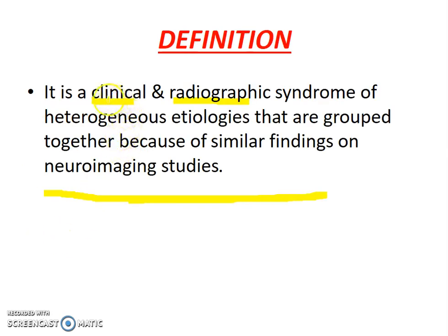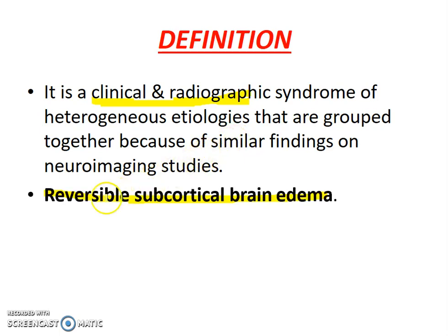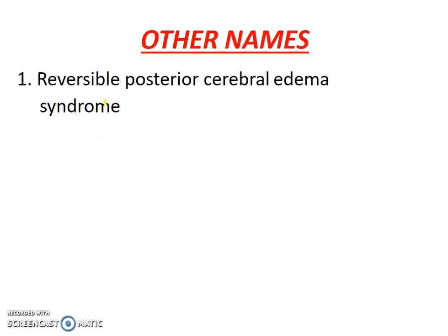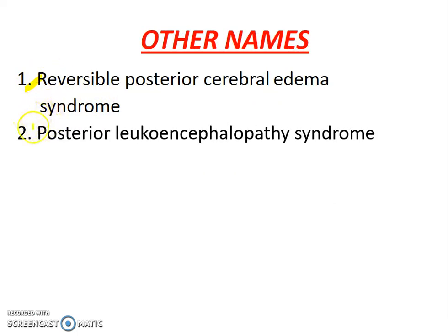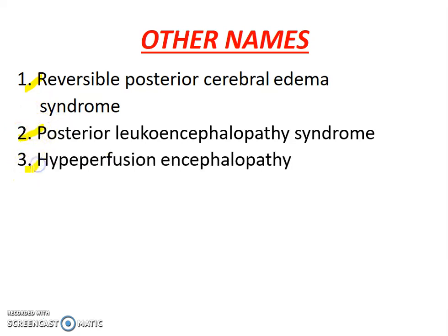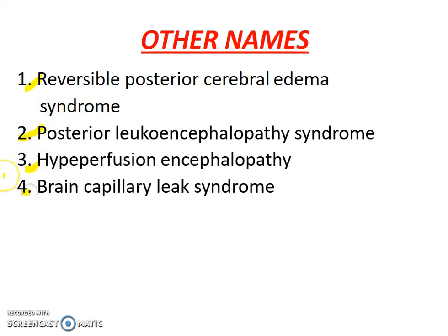First, the definition. It is a clinical and radiographic syndrome of heterogeneous etiology that are grouped together because of similar findings on neuroimaging studies. Basically, it is a reversible subcortical brain edema — both a clinical and radiographic syndrome. The other names are reversible posterior cerebral edema syndrome, posterior leukoencephalopathy syndrome, hyperperfusion encephalopathy, or brain capillary leak syndrome.